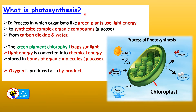Photosynthesis is a process by which organisms like green plants use light energy — especially sunlight — to synthesise complex organic compounds, which are carbohydrates such as glucose and starch, from carbon dioxide and water. Carbon dioxide is obtained from the air and water from the soil. The green pigment chlorophyll in the chloroplast traps sunlight and converts light energy into chemical energy, firstly stored in ATP molecules, and then finally in the bonds of the sugar molecules formed. Oxygen is produced as a by-product and released into the atmosphere for cellular respiration.